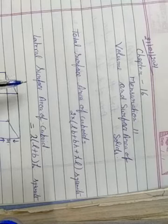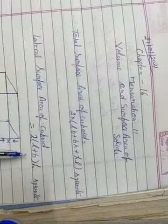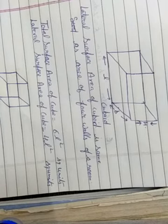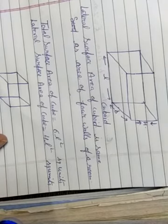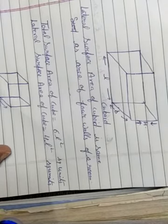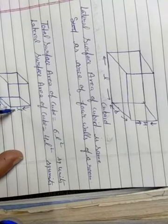Everyone, write all the formulas in your notebook and draw diagrams also. Write the formula for total surface area of cuboid, then the formula for cube — total surface area of cube and lateral surface area of cube. Its sides are all equal: L, L, L.